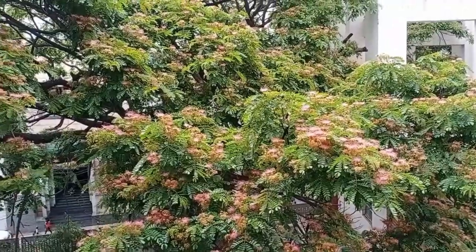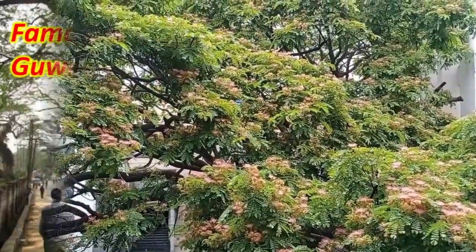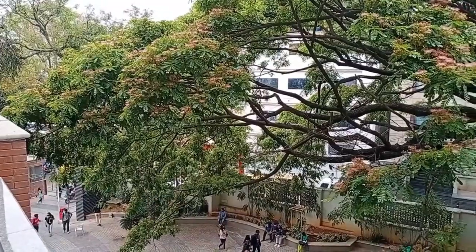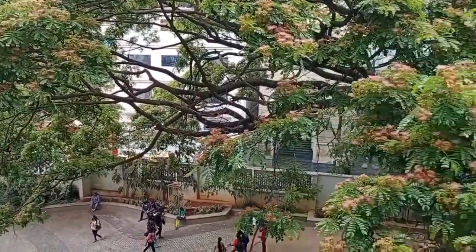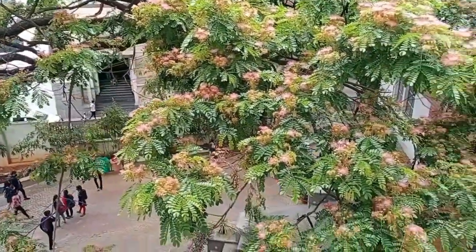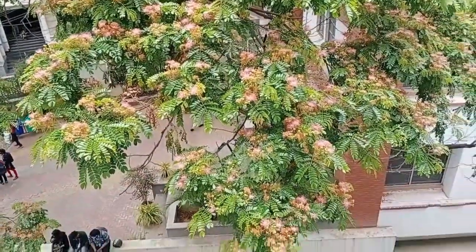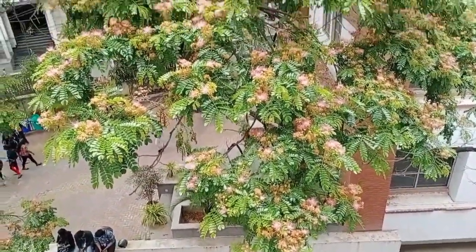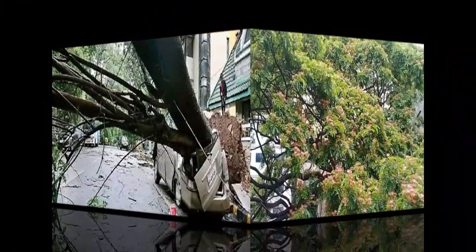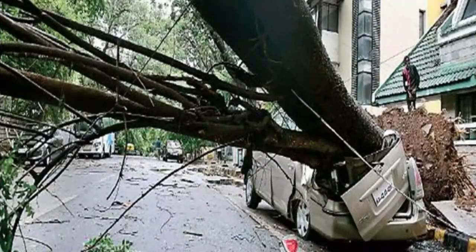There is a famous Brahmaputra rain tree located in Guwahati on the banks of the Brahmaputra River in Assam, and the thickness of the trunk is about 12 feet in diameter. The large branches of the tree sometimes break and fall off during the rainy season, which can be hazardous if they fall on moving vehicles and cause accidents.